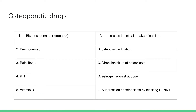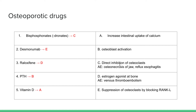Moving on to osteoporotic drugs. Bisphosphonates directly inhibit osteoclasts. Adverse effects of these drugs are osteonecrosis of the jaw and reflux esophagitis — you're supposed to sit upright for 30 minutes after taking this drug. The second drug is denosumab, a monoclonal antibody that suppresses osteoclasts by blocking RANK ligand.